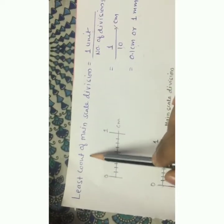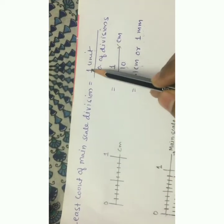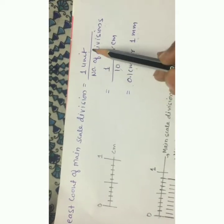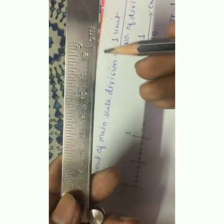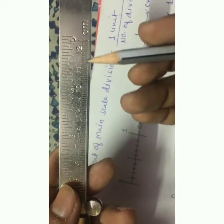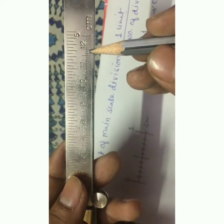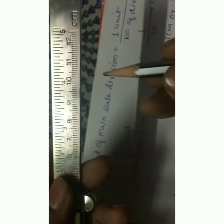The formula to find the least count of the main scale is: one unit traveled divided by the number of divisions in traveling one unit. As you can see on the main scale, traveling from 11 to 12 is one unit, and there are 10 number of divisions in that interval.